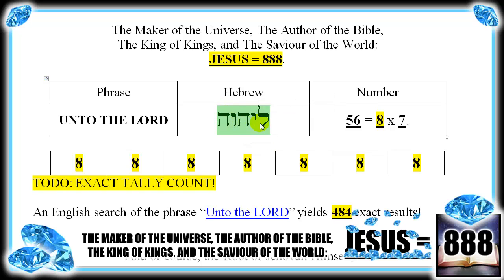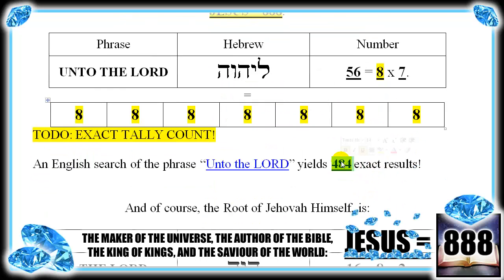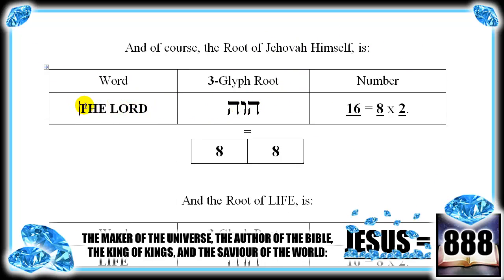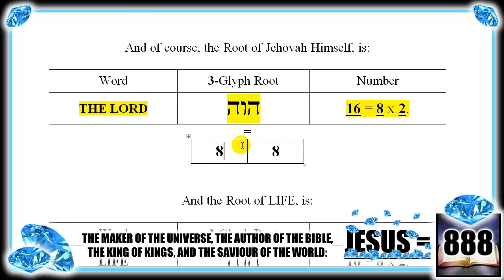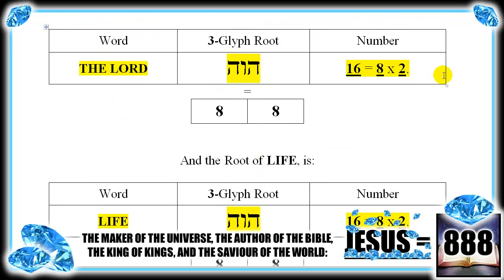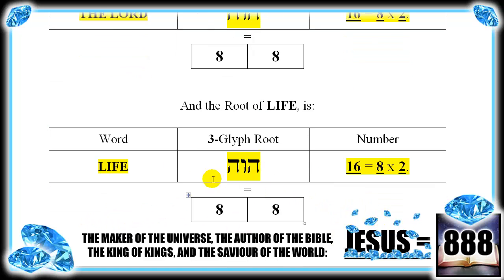This exact sequence of five letters — unto Jehovah, always unto Jehovah — everything that you do is unto the Lord. This is a huge gem which occurs at least 450 times in the Hebrew Scripture, an astonishing number of times. The root of Jehovah himself is right here: the three-glyph root of the Lord, Jehovah, which is a double of 8. And the root of life — the life which you live right now, to be, to exist — is the exact same. The root of life is the same as the root of Jehovah, the existing one.